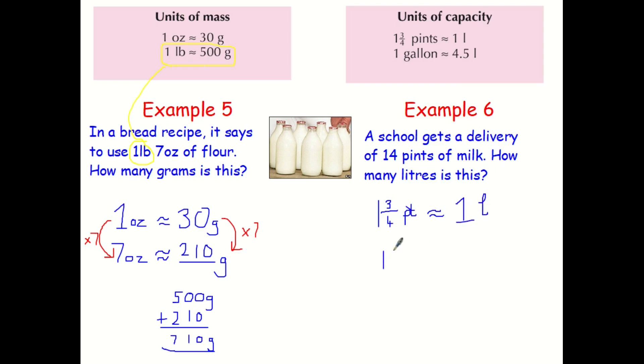So I need to figure out 14 pints, how many litres that is. So I don't know how many that is yet. What do we have to find out? Well, we have to find out how many one and three quarters are in 14. So you're going to do 14 divided by one and three quarters to find your multiplier, which gives you eight. And then whatever you do there is the same on that side. So one multiplied by eight is eight. So eight litres get delivered to the school.